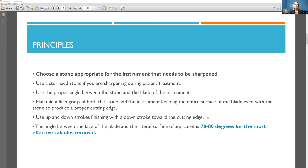But okay, so with this slide, read through it, stop the video if you need to. But remember that when you are done sharpening, you would finish with your instrument going down, with the sharpening stone going down, not up, but down. So finish on a downward stroke, that is the best way to do it. And I'm talking about a curette here. So the angle between the face of the blade and the lateral surface of any curette is 70 to 80 degrees for the most effective calculus removal. So make sure to note that.